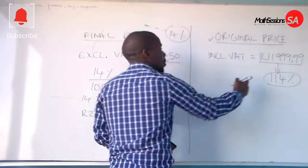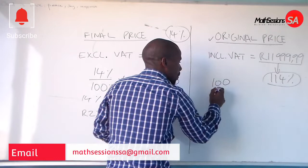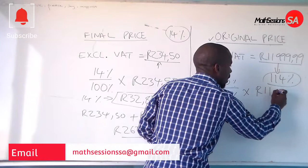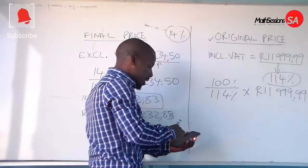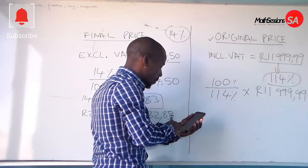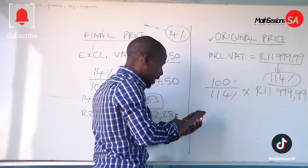What we want to extract is the 100%. So to get the 100%, we say: 100% divided by 114%, multiplied by R1199.99. That is the way to get our original price — 100 divided by 114, multiplied by R1199.99.